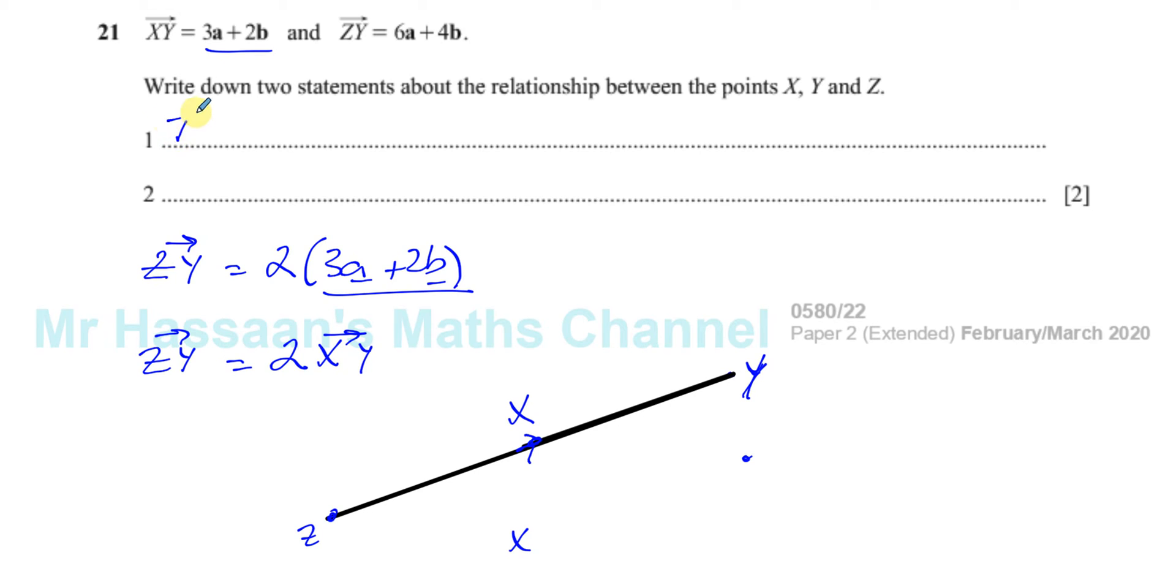So you can say they are on the same line because it's asking about X, Y, and Z. They are on the same line. Another word for that is collinear. That means they share the same line.